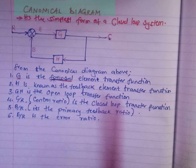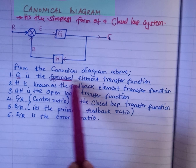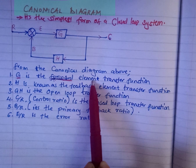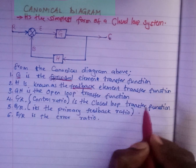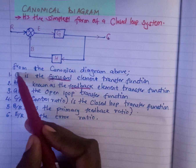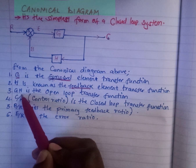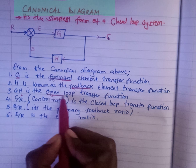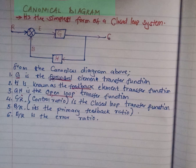Let us now define the terms in our canonical diagram. G is the forward element transfer function — G will always be in the forward path. H is the feedback element transfer function — H will always be in the feedback path. When we take the forward element times the feedback element, we have GH, and the product of the two is the open loop transfer function. To calculate the open loop transfer function, you take G times H.